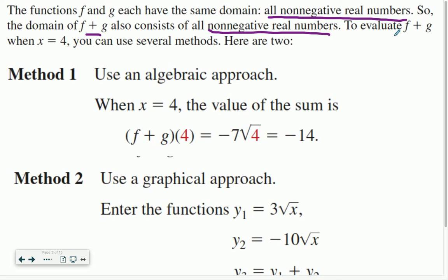So to evaluate (f + g)(x) when x equals 4, you can use several methods. Here are two. The first one is algebra. It's not hard because we've already deciphered that (f + g)(x) is negative 7√x.